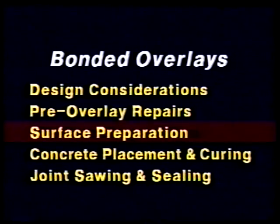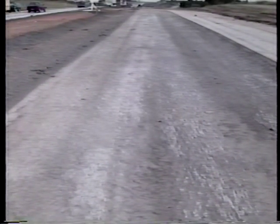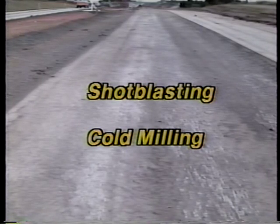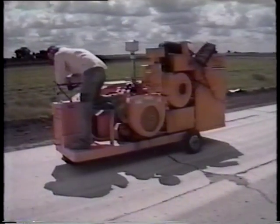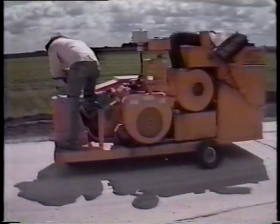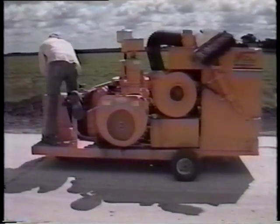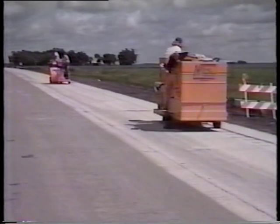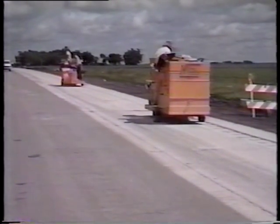Now we're ready for surface preparation. The pavement must be thoroughly cleaned to remove all foreign matter and contaminants from the surface — cleaning is essential for a good bond between the overlay concrete and the base slab. This can be achieved by removing a thin layer of concrete at the surface and then following up with a secondary cleaning. Shot blasting and cold milling are effective methods of surface removal. Shot blasting equipment hurls steel shot at the pavement under a housing unit to remove about one-eighth inch of the surface; the shot is recycled and the removed concrete is vacuumed, leaving a rough, highly porous surface that helps develop a strong bond.